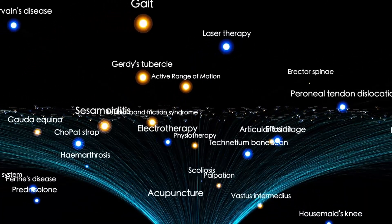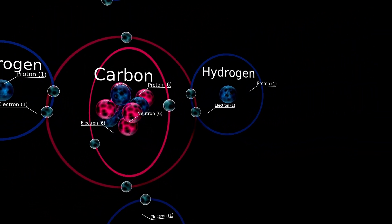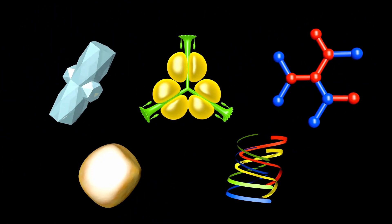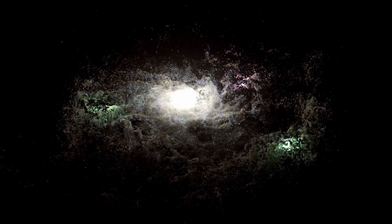While the public waits for answers, something is breaking behind closed doors. Leaked documents from NASA and the European Space Agency reveal a deep fracture. Not about what Neo-Oumuamua is, but about how long they've known.